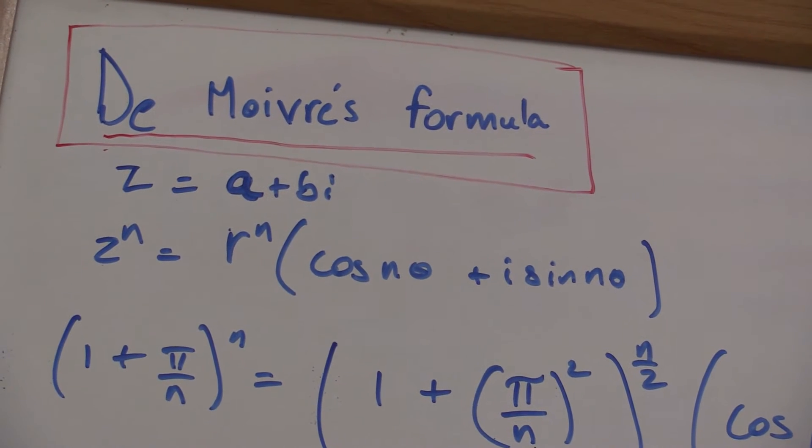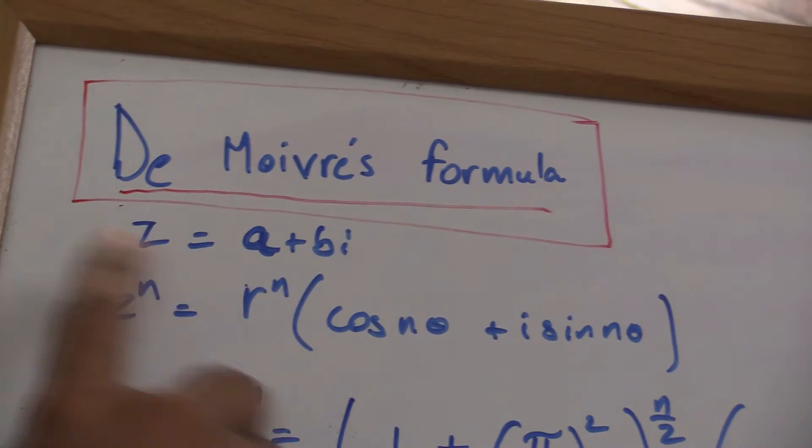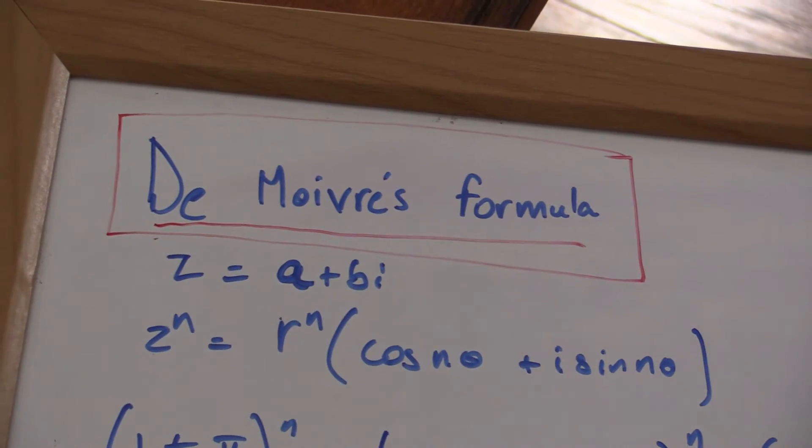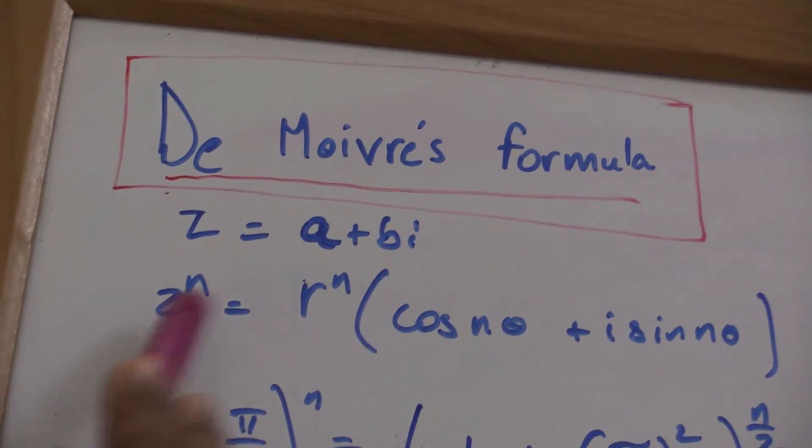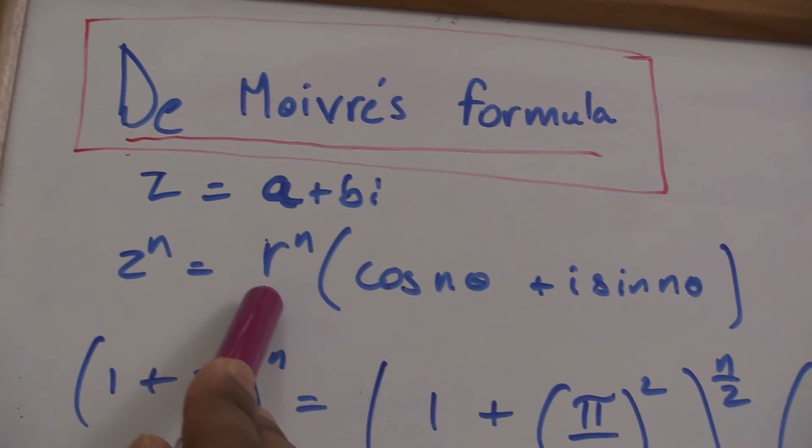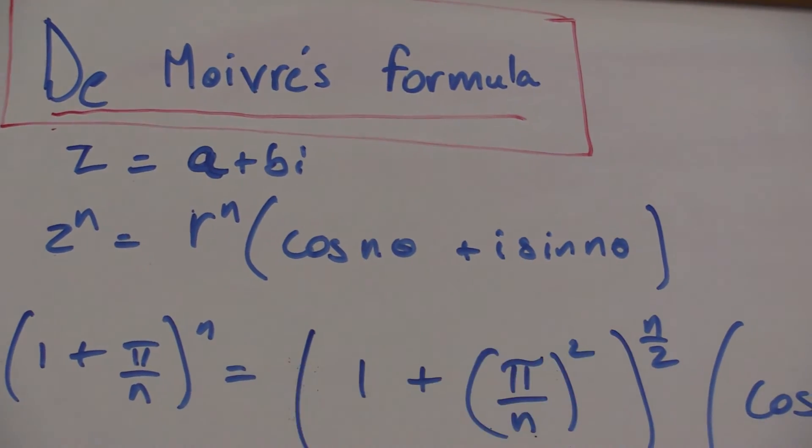To understand raising an imaginary number to the nth power, we use De Moivre's formula. If z is a complex number a plus bi, De Moivre's formula states that z to the nth power equals its modulus to the nth power times the cosine of nθ plus i times the sine of nθ.